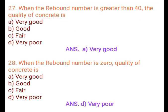Question 27: When the rebound number is greater than 40, the quality of concrete is: A. Very good, B. Good, C. Fair, D. Very poor. Answer: A. Very good.